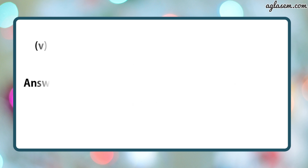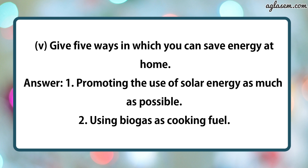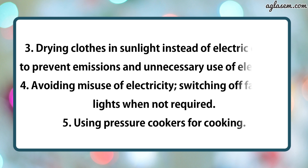Fifth part says: give five ways in which you can save energy at home. First, promoting the use of solar energy as much as possible. Second, using biogas as cooking fuel. Third, drying clothes in sunlight instead of electric dryers to prevent emissions and unnecessary use of electricity. Fourth, avoiding misuse of electricity by switching off fans and lights when not in use. Fifth, using pressure cookers for cooking.